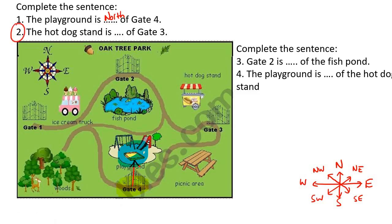Number two. The hot dog stand. So the hot dog stand is over here. Is what of gate number three. So you stand at gate number three. And if you look at the hot dog stand, it's not north. North would be there. It's not west. West would be there. So then it's the in-between one, which is northwest. So I'm just going to put here NW. But you understand that that means northwest.